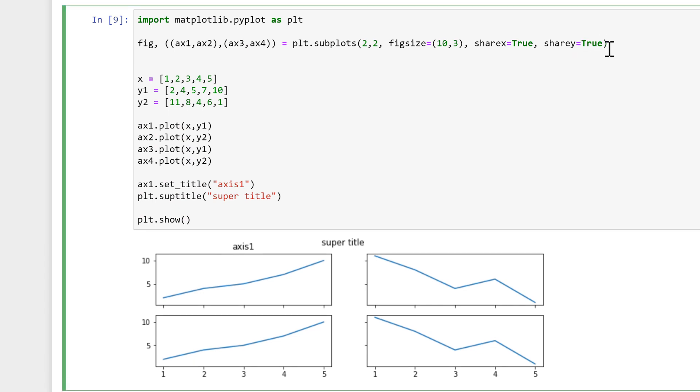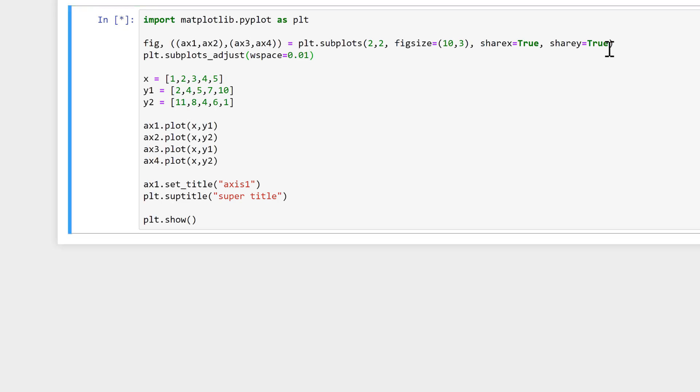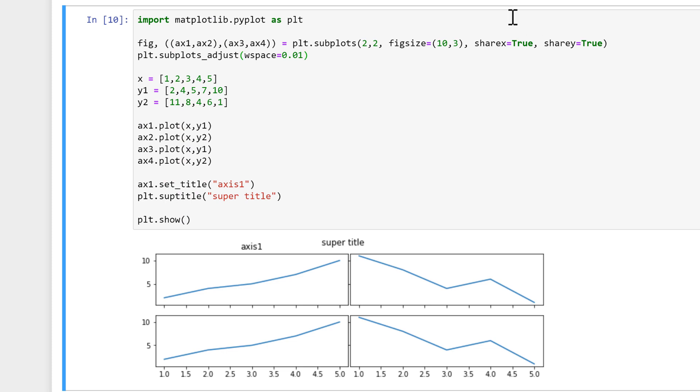Then I can go plt.subplots_adjust, and I can use wspace, and the w stands for width, and I can put a number for this, and this will change the amount of space in between the subplots.